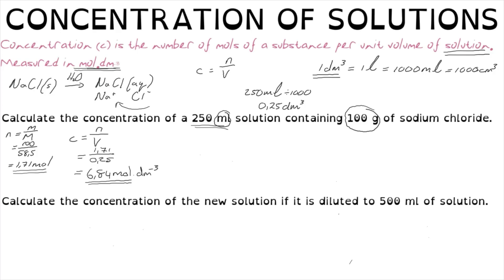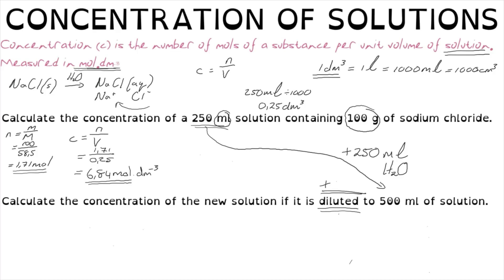A common follow-on question involves dilution. For example: calculate the concentration of the new solution if it is diluted to 500 millilitres. The volume increases from 250 mL to 500 mL, meaning 250 mL of water is added. The word 'diluted' means no further sodium chloride is added — we are only increasing the volume. Therefore the number of moles of sodium chloride remains the same.